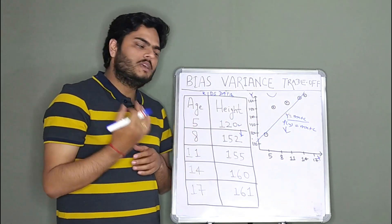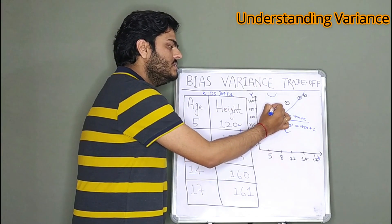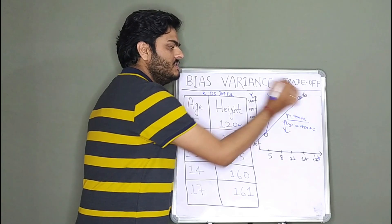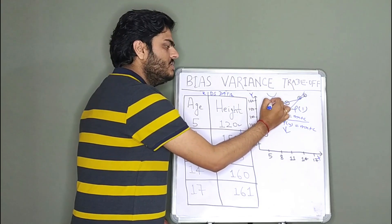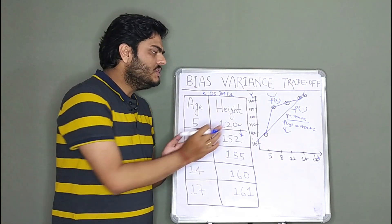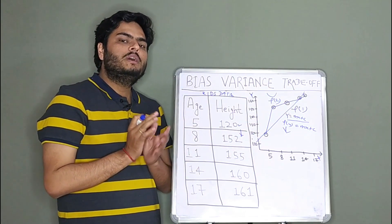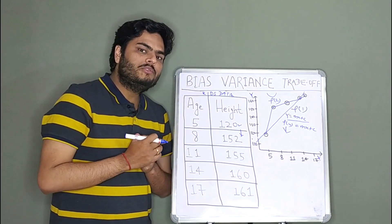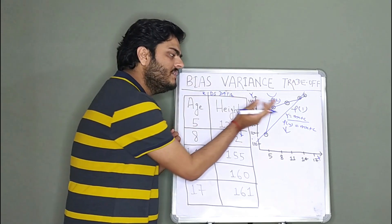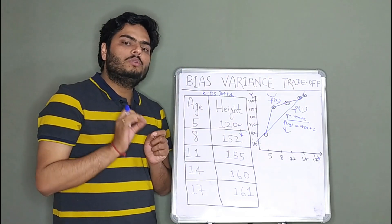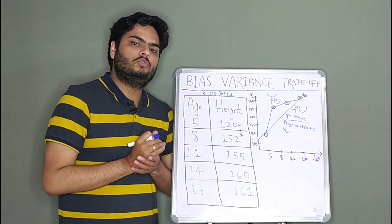There is another way to fit a model on the same data. Instead of a straight line, you could take a function that follows the data like this — curving through every point. This is your f1 (straight line) and f2 (curving function). If you see closely, f2 is just following the training data. It is not assuming any particular form — linear or otherwise — it is just going wherever the training data goes.